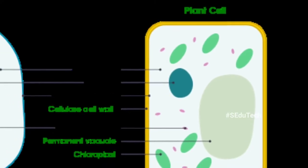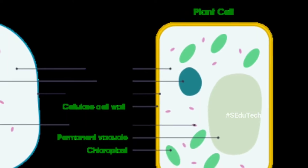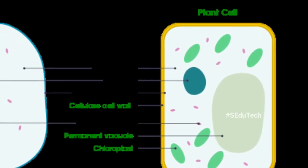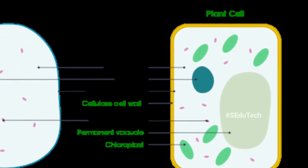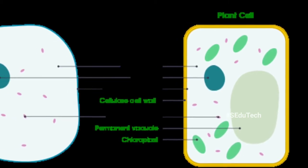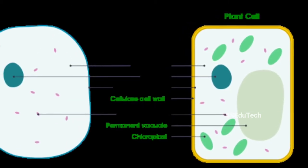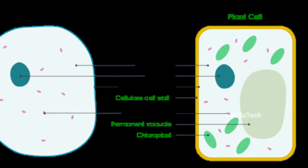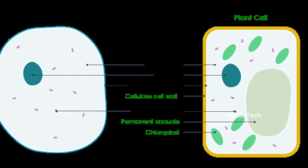The second part is the cell membrane. This is a protective layer that supports every cell and separates it from the external environment. It is found just inside the cell wall and is made up of complex lipids, which are fats, and proteins.